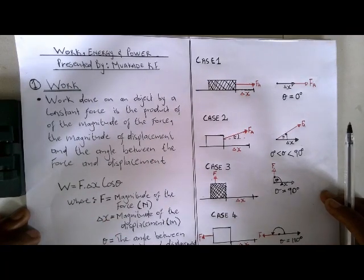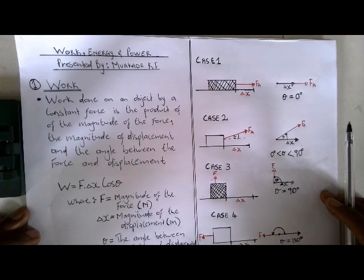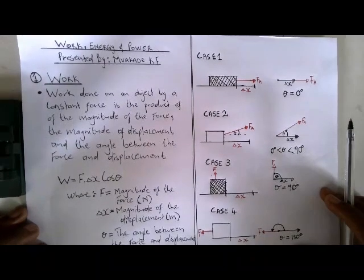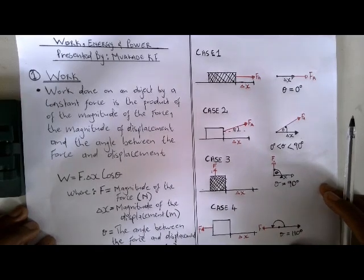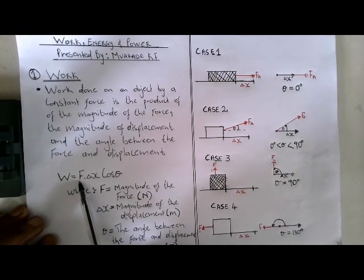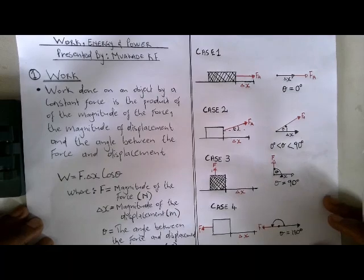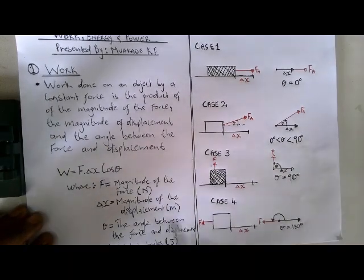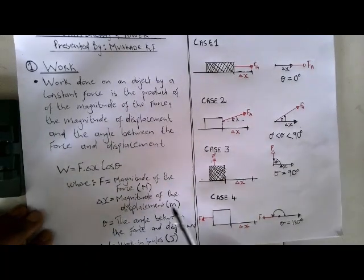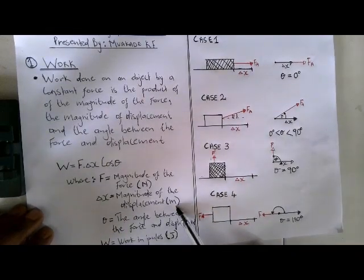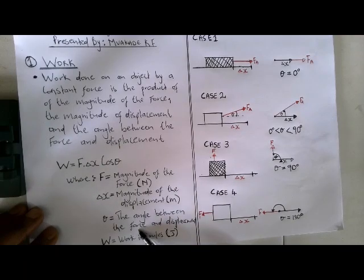What is work? The work done on an object by a constant force is the product of the magnitude of the force, the magnitude of the displacement, and the cosine of the angle between the force and the displacement. This can be represented by the formula W = F·Δx·cosθ, where F is the magnitude of the force in Newtons and Δx is the magnitude of the displacement in meters.